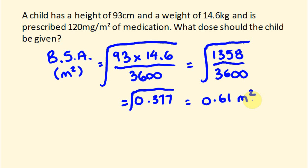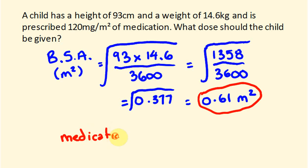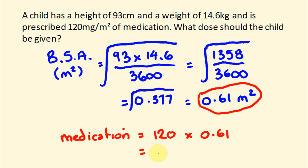Now with this body surface area of 0.61 metres squared, we can see that we have 120 milligrams per metre squared. So the dosage is equal to 120 milligrams times 0.61. Because for every metre squared we get 120 milligrams, but we don't quite have a full metre squared — we have about 0.61, almost six-tenths of a metre. So the number will be less than 120. The answer we get is 73.2 milligrams.